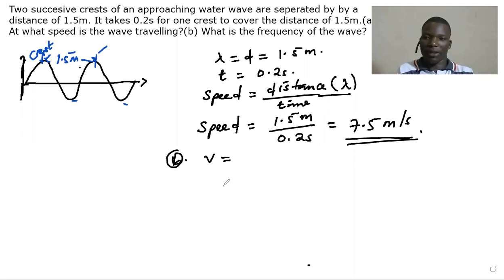So speed, denoted by v, is wavelength times frequency. So once we multiply the wavelength by frequency we get the speed. So we divide throughout by wavelength.